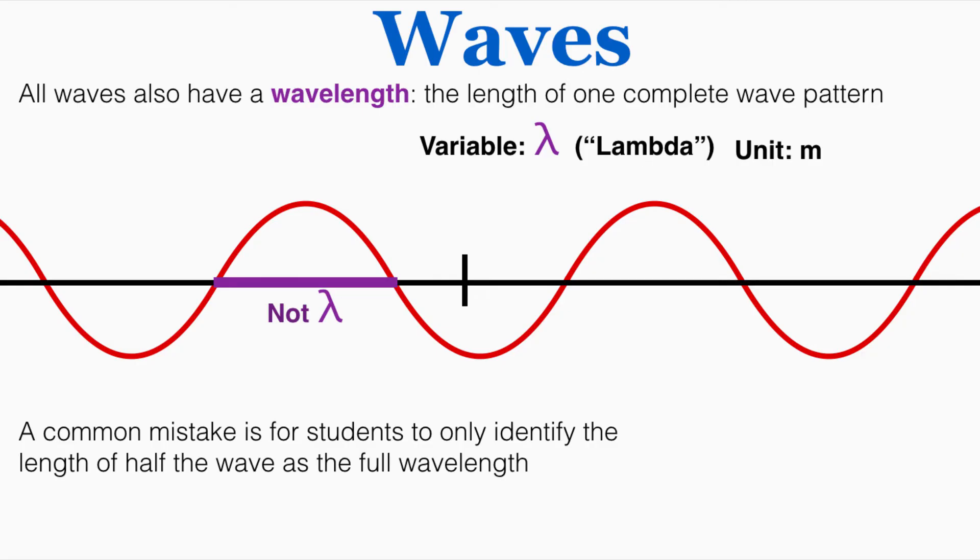A common mistake is for students to only identify the length of half the wave as the full wave. They'll see this looks like a complete pattern so this must be the wavelength, but that's actually only half the wavelength.